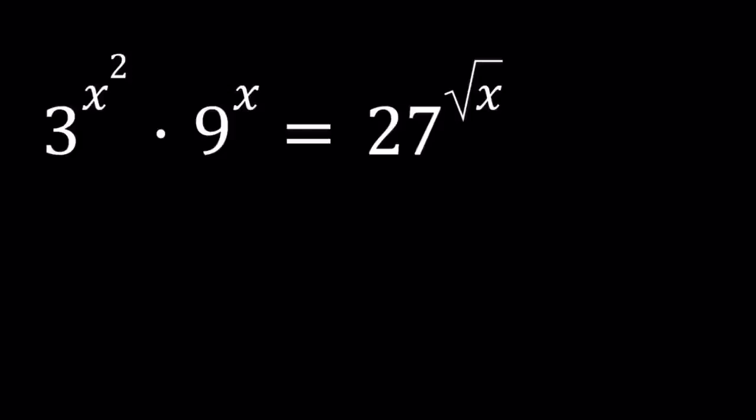In this video we're going to be solving an exponential equation. We have 3 to the power x squared times 9 to the power x equals 27 to the power square root of x. We're going to be solving this equation for x, looking at real solutions as well as non-real solutions if there are any. So we're going to be finding all the solutions.